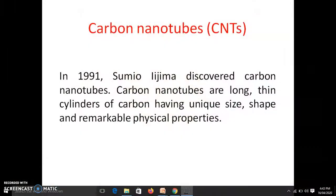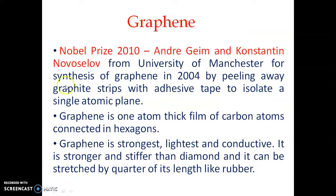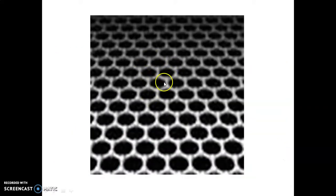Graphene is a one-atom-thick layer of carbon where the carbon atoms are interconnected into hexagons, forming a planar sheet. It is only one atomic layer thick. Graphene was synthesized in 2004 by Andre Geim and Konstantin Novoselov, and the Nobel Prize in Physics was awarded to them in 2010 for this work.